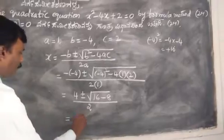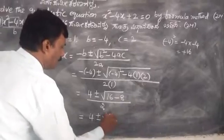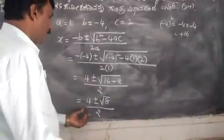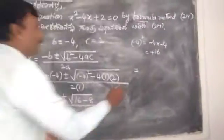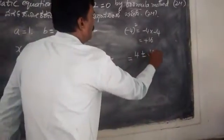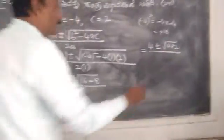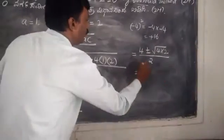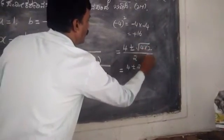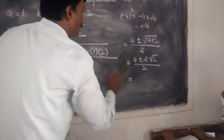So we have 4 plus or minus the square root of 16 minus 8, divided by 2. That gives 4 plus or minus the square root of 8. Since 8 equals 4 times 2, the square root of 4 is 2, giving 2 root 2. Divided by 2, the 2 cancels.